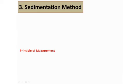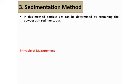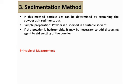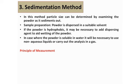The next method is sedimentation method. In this method the particle size can be determined by examining the powder as it sediments out. We are allowing the powder to sediment and while the powder will sediment we are going to determine its particle size. Sample preparation: the powder is dispersed in a suitable solvent. If the powder is hydrophobic use a polar solvent. If it is not mixing up properly then we can also use a wetting agent to the powder. In case the powder is soluble in water, if the powder is hydrophilic, then it is always necessary to use a hydrophobic liquid or to carry out the analysis using gas.